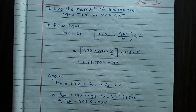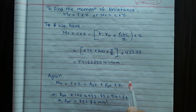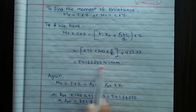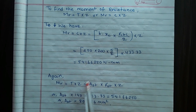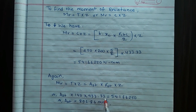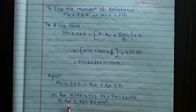MR = AST × σST × Z. Substituting: MR = AST × 140 × 433.33. Solving, AST = 892.86 mm².